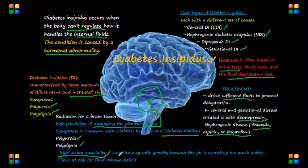The patient will have a low urine specific gravity because they are excreting large amounts of water — resulting in high serum osmolality and low urine specific gravity.